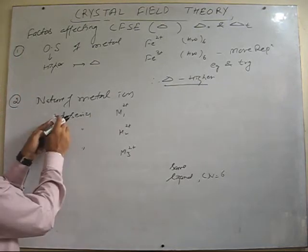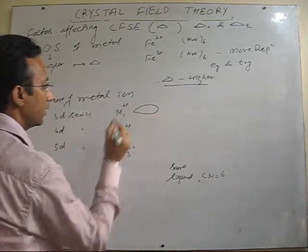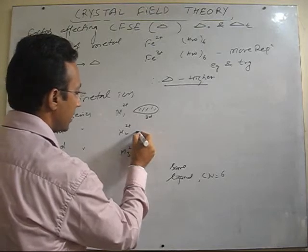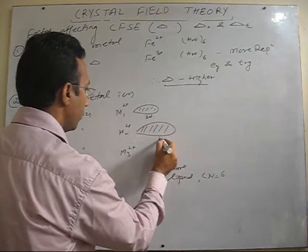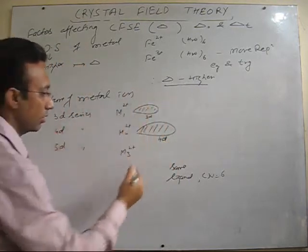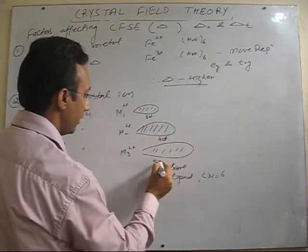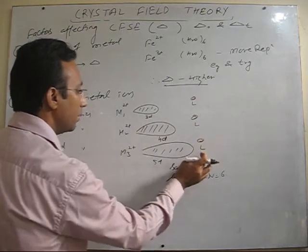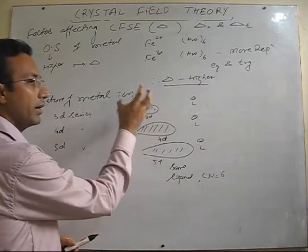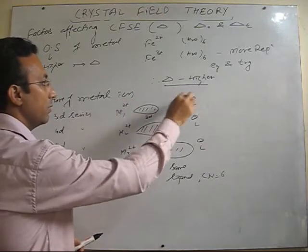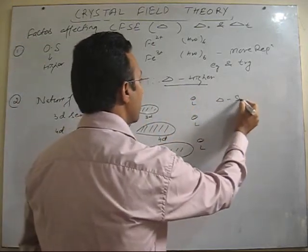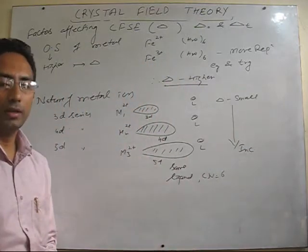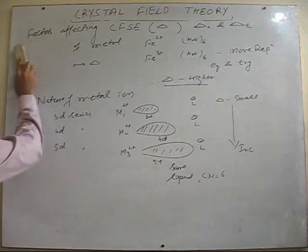If it belongs to the 3D series, there is a 3D orbital with electron density around the metal. In the second case, 4D orbitals have a larger size than 3D with more electron density distribution, and 5D is even larger. Since the negative field of the ligand is much closer to the compact 3D orbital, this electron density will be less repelled by the ligand, so delta will be small. As we go down the series towards 5D, delta goes on increasing — crystal field splitting goes on increasing. These are the two factors related to the metal: oxidation state and nature of metal.